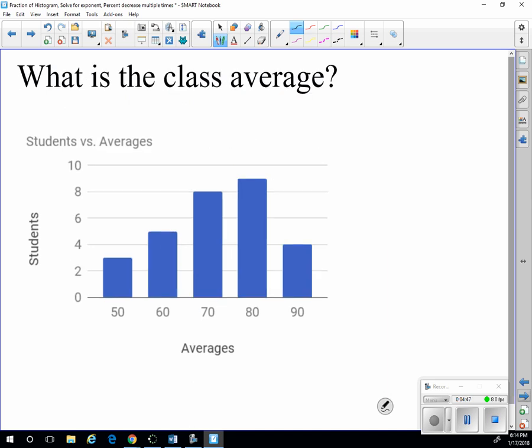So what is the class average? So I have 3 students that score 50. So 3 times 50 is 150. And I have 5 that score 60. So 5 times 60 is 300 points. I have 8 times 70. 8 times 7 is 56. So 8 times 70 is 560.